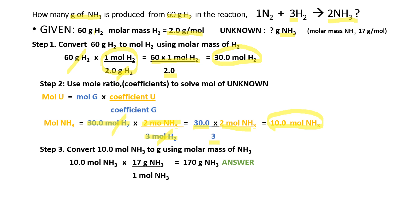But the unknown is grams, not moles. Therefore, convert 10 moles of NH₃ to grams by multiplying by the molar mass of NH₃, which is 17 grams per mole: 10 mol NH₃ × (17 g NH₃ / 1 mol NH₃) = 170 grams of NH₃.